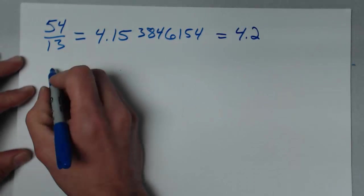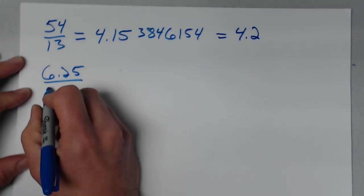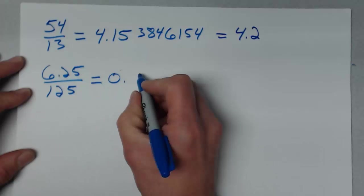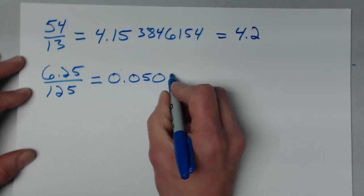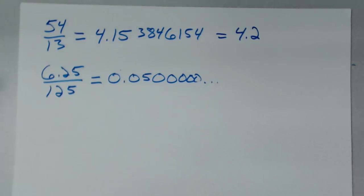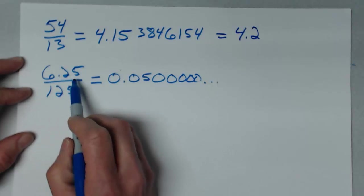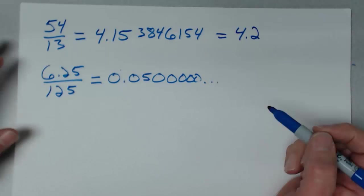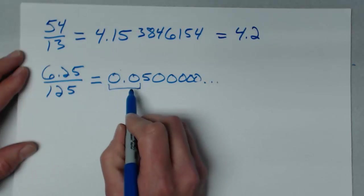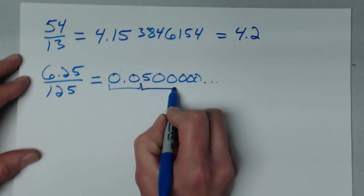Another problem: 6.25 divided by 125. When I do that, I get 0.05000000, repeating. I've got three significant figures on the bottom and three on the top. I want to write it with three significant figures. But I have to remember: leading zeros are not significant, so the significant figures have to start at the five, and I want three of them.